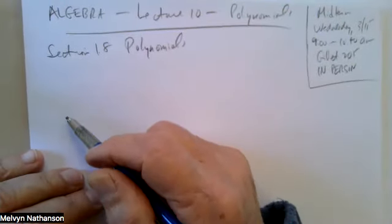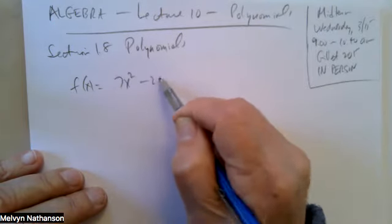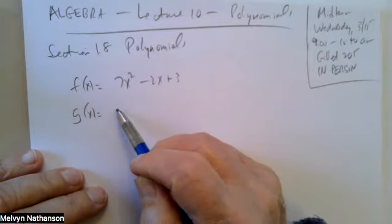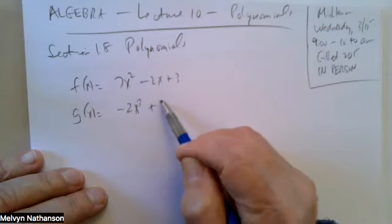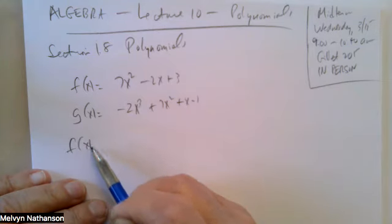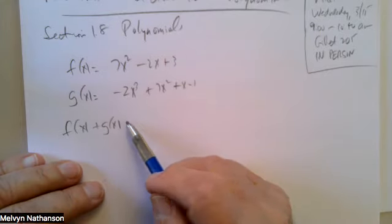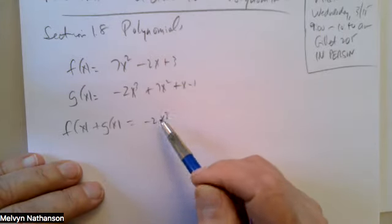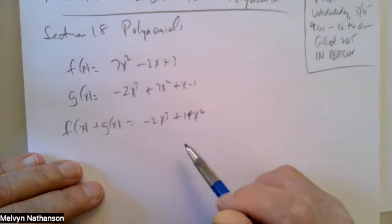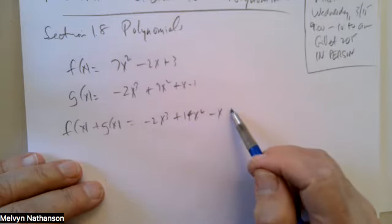If we have two polynomials, say f(x) = 7x² - 2x + 3 and g(x) = -2x³ + 7x² + x - 1, if you add the polynomials you're just adding term by term: -2x² - 2x² + (-2x + x) = -x, and 3 - 1 = 2.